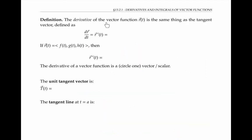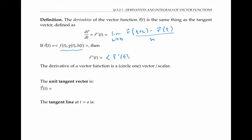To summarize, the derivative of the vector function r of t is the same thing as a tangent vector, defined as dr/dt or r prime of t, as the limit as h goes to zero of r of t plus h minus r of t over h. If r is given in components — making it a three-dimensional vector function — then r prime of t can be computed by taking the ordinary calc one derivatives of each component separately. The derivative of a vector function is a vector, and again it's the same thing as the tangent vector.